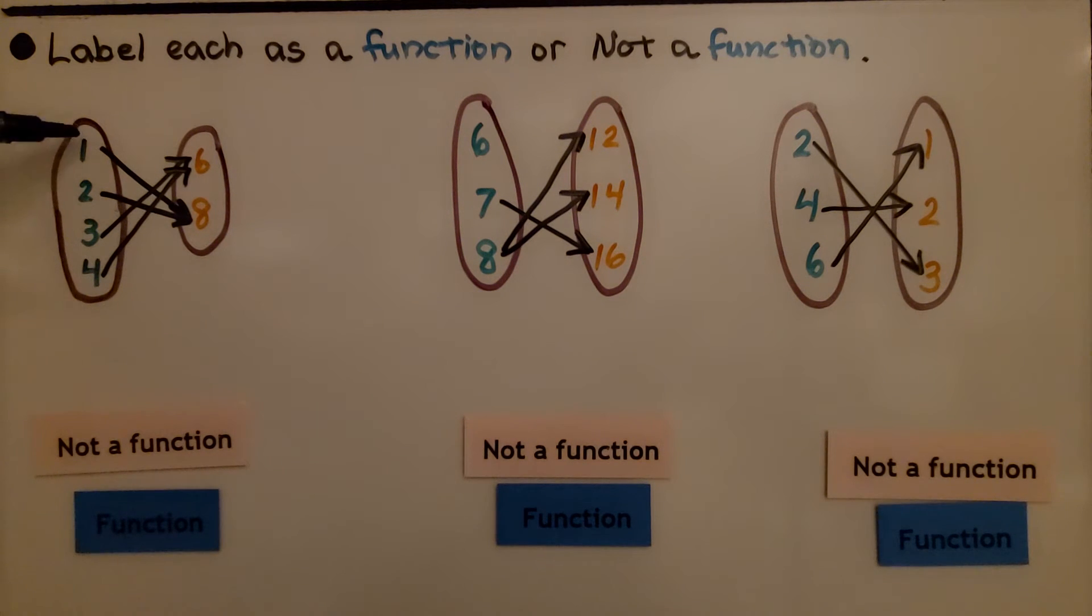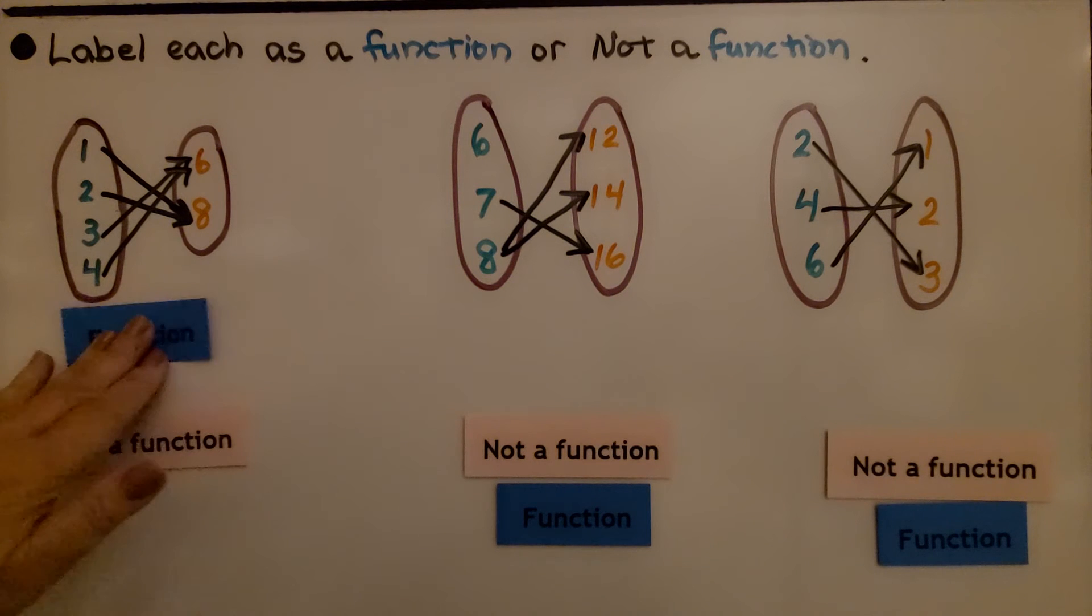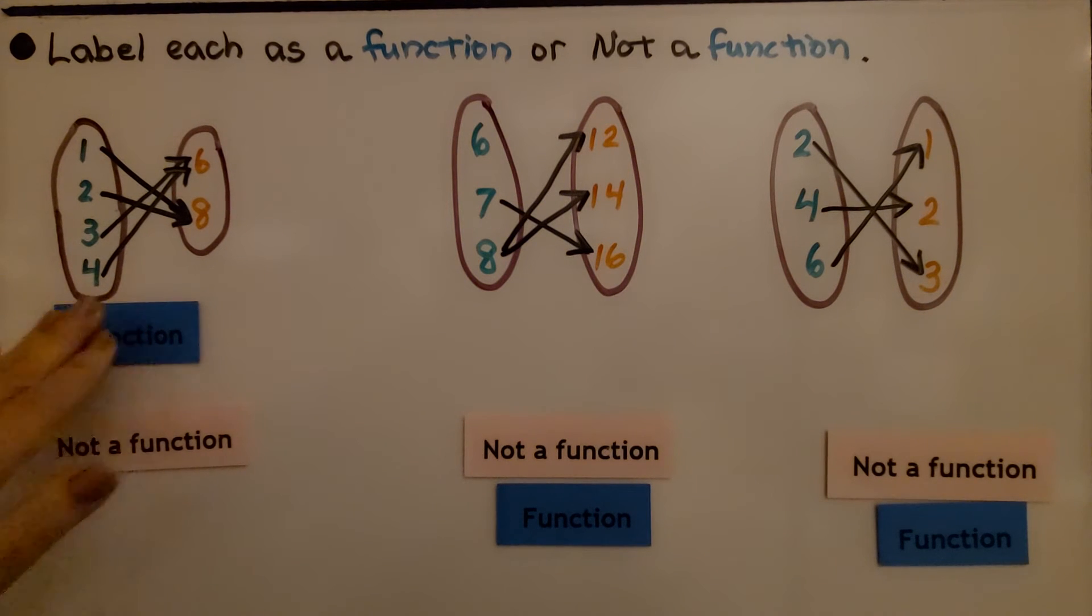We have 1 being sent to 8, 2 being sent to 8, 3 being sent to 6, and 4 being sent to 6. Well, it looks like the input values are only sending one arrow, so this would be a function. They're allowed to send one arrow to the output.